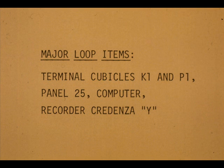The major control center loop items are terminal cubicles K1 and P1, panel board 25, recorder credenza Y, and the computer.